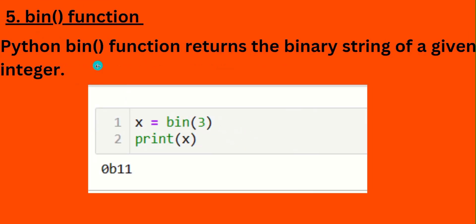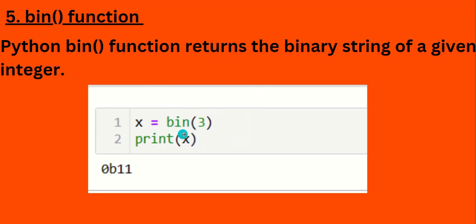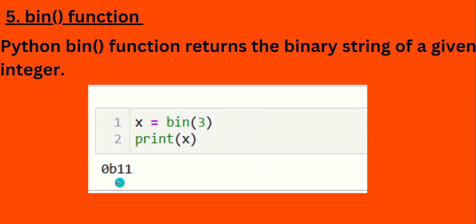Next, the binary function given by the keyword 'bin'. The bin function returns the binary value of a given integer. For example, bin(3) returns 0b11, bin(4) returns 0b100, and bin(5) returns 0b101. The prefix '0b' represents a binary value.